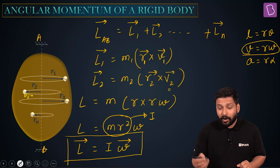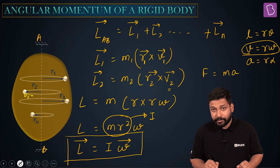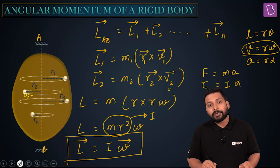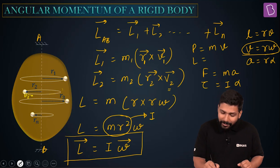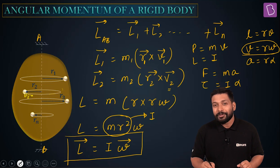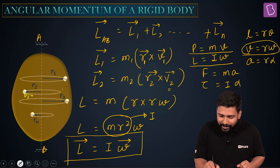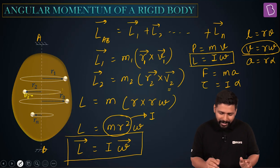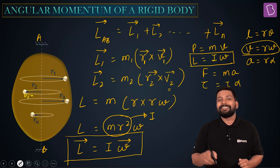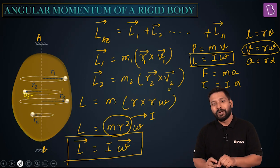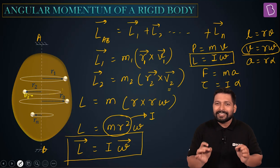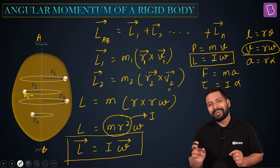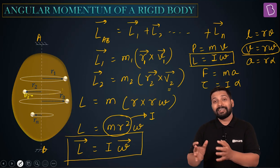By analogy: just as force equals mass times acceleration, we got torque equals moment of inertia times angular acceleration. Similarly, just as linear momentum equals mass times velocity, angular momentum equals moment of inertia times angular velocity — L vector equals I times omega vector. Moment of inertia plays the role of angular mass. So angular momentum equals angular mass times angular velocity. It's the same formula — just add the word angular.